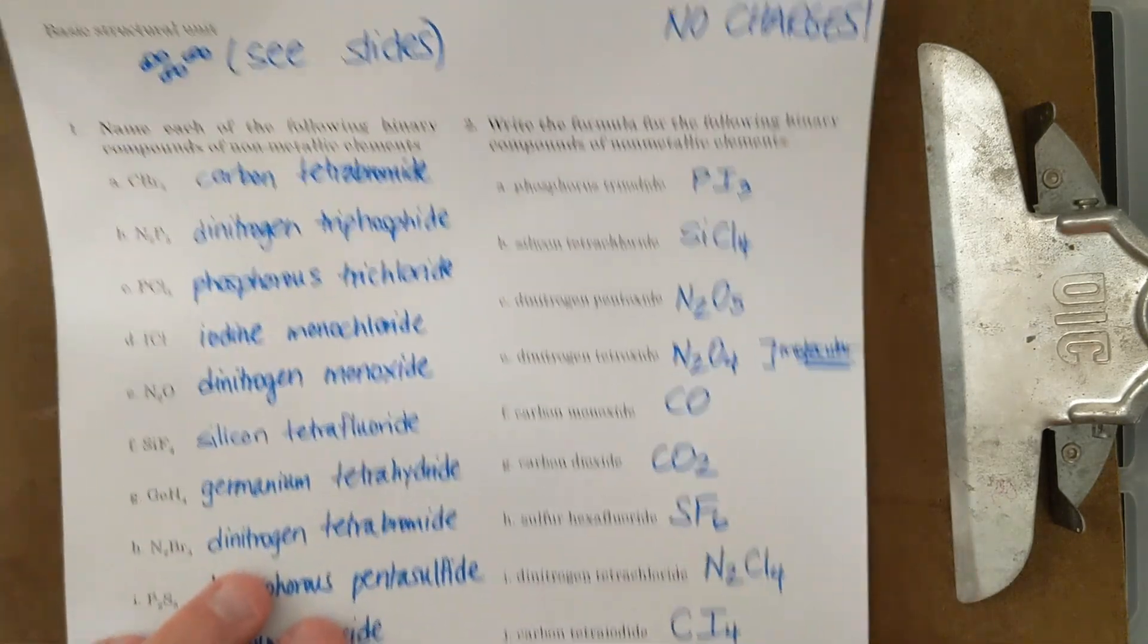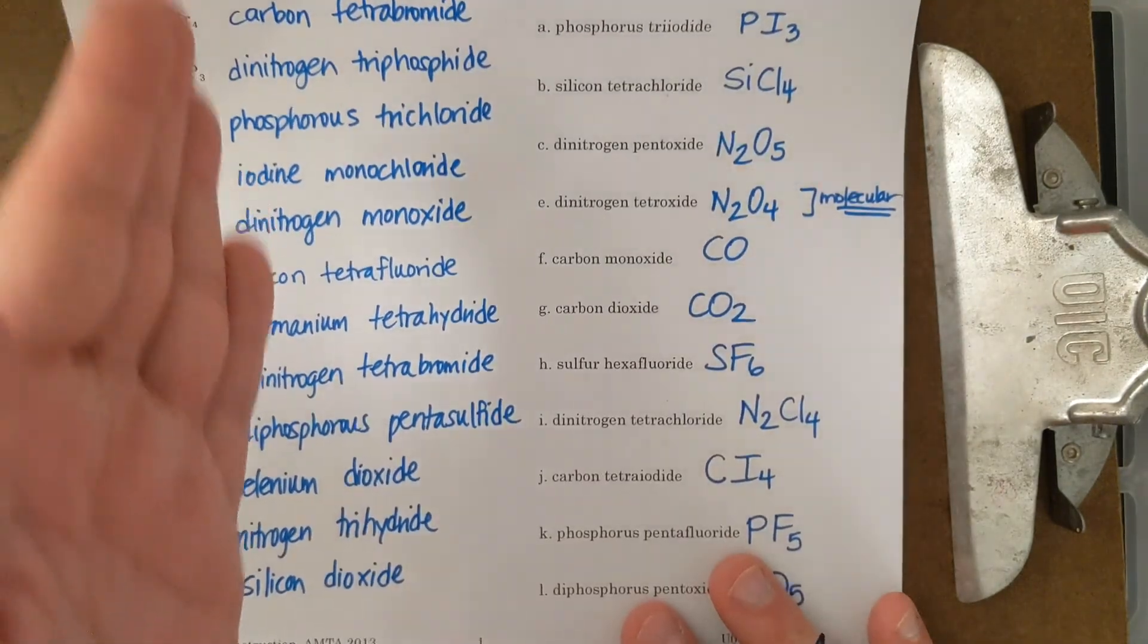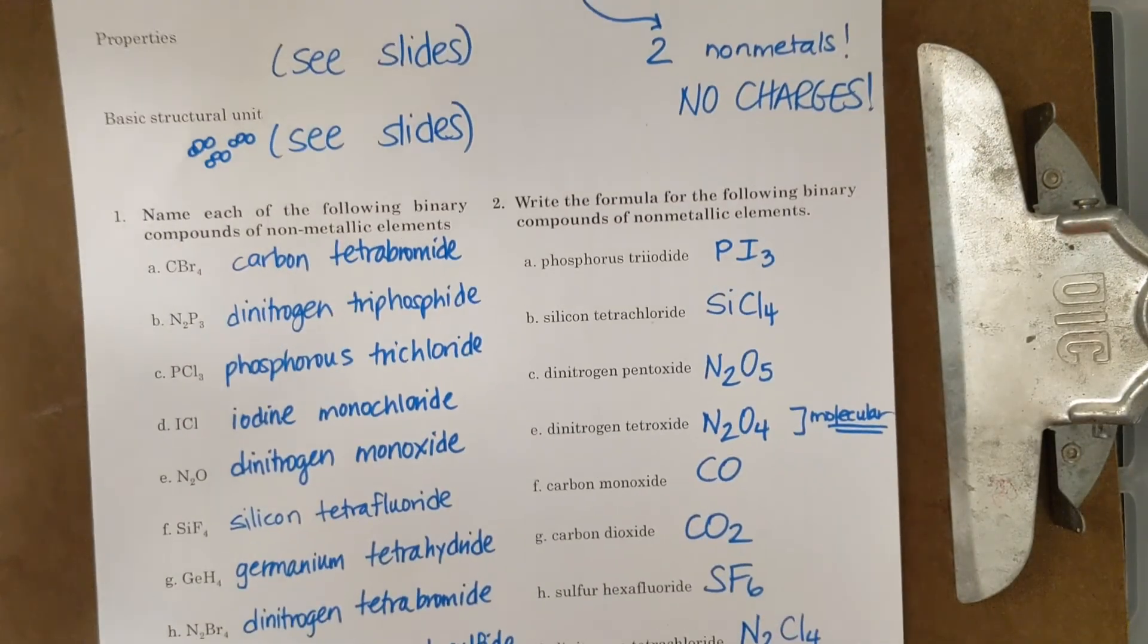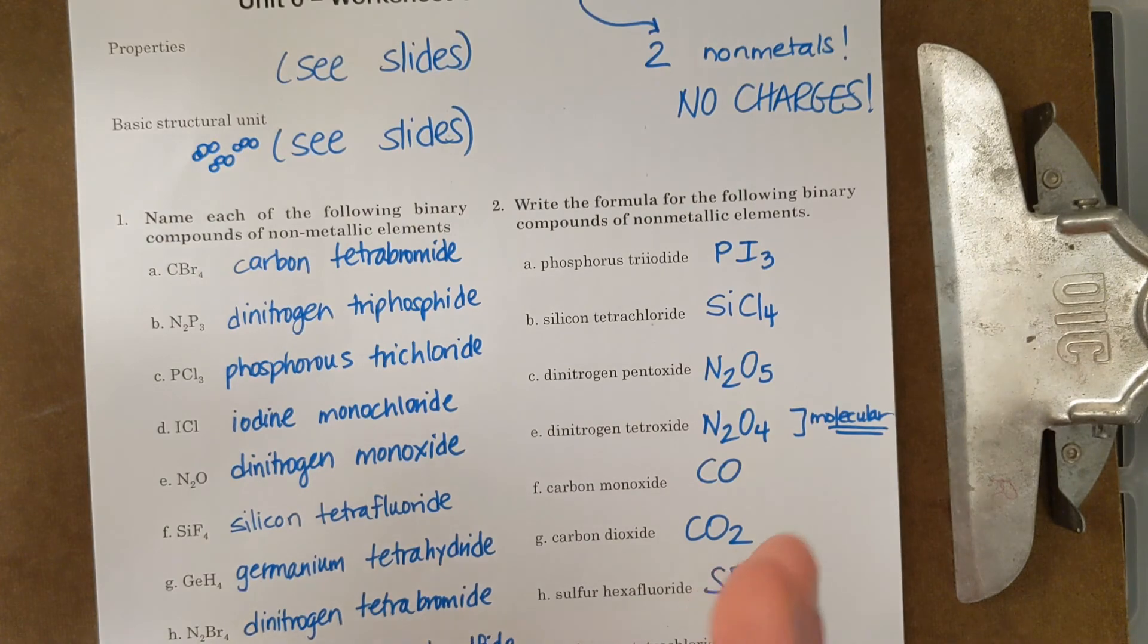All right. So this is the video answer key for naming and writing formulas for molecular compounds a lot quicker than ionic formula. Make sure you're able to distinguish that I have molecular compounds here because I have two nonmetals. If I had three nonmetals or a metal or a polyatomic ion, those are ionic compounds.